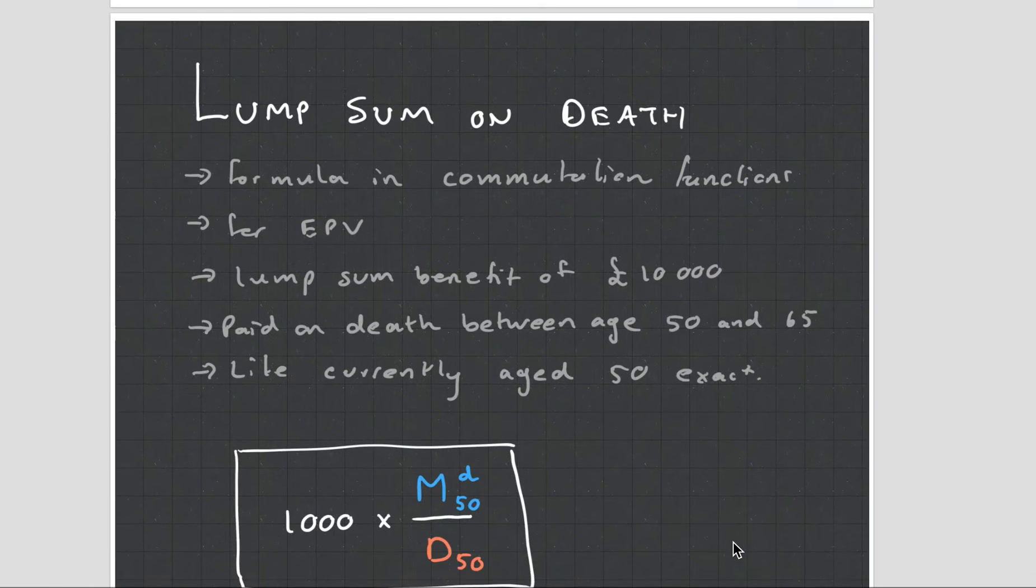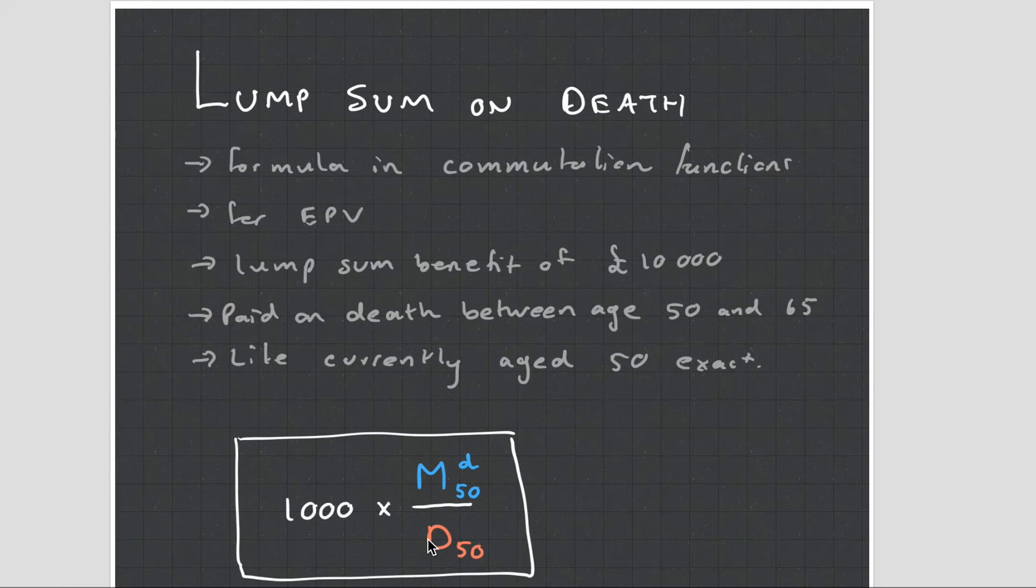Finally, what I want to talk about is just this M function here, because suddenly in my previous video, I just introduced M. And let's look here. What this is saying, this is a lump sum on death. So it's a formula in the commutation functions, again, it's an expected present value, it's a probability, it may or may not happen. So we have, I've written 10,000 there, but 1000, it doesn't matter what number. So let's say 1000 rand that we're going to pay to a person on death.